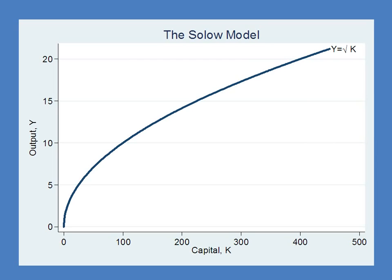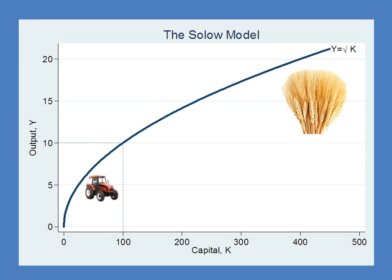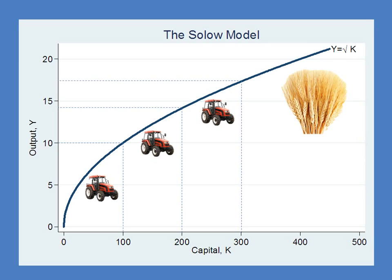This graph has diminishing returns. Let's say this is a wheat farm, and a tractor is 100 units of capital. Your first tractor helps you produce 10 units of output. The second tractor is not quite as useful because you've already got one running — you can't run it as often — so you only get about 4.1 units of output from your second tractor. The third tractor you can only use when the first two break down, so on average it produces even less — about 3.1 or 3.2 units. This is our production function: it has diminishing returns to capital.